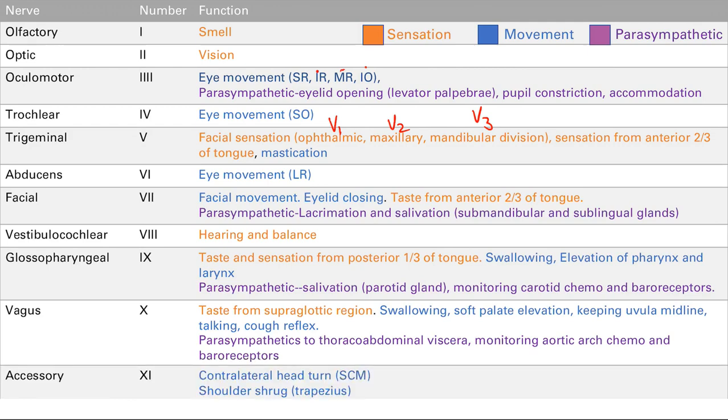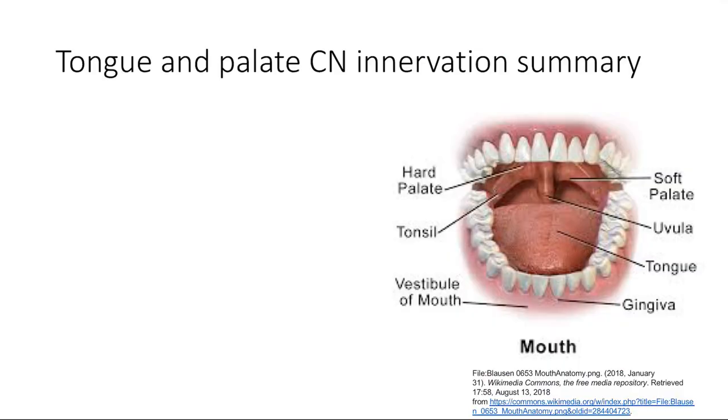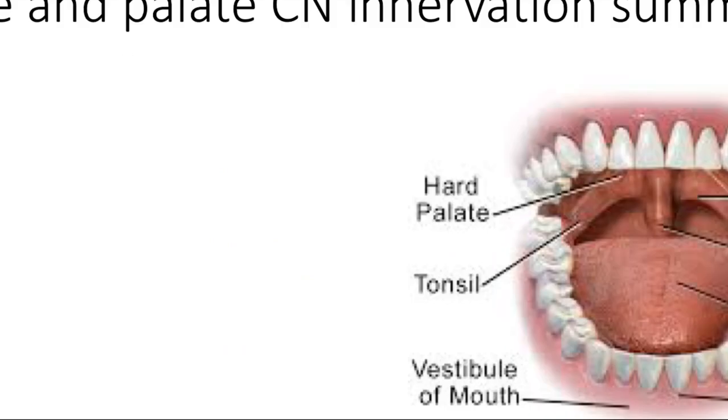Cranial nerve 11 is the accessory nerve, providing motor innervation to the sternocleidomastoid muscle and the trapezius. The sternocleidomastoid does contralateral head turning, and the trapezius does shoulder shrug. Finally, cranial nerve 12 is the hypoglossal nerve, responsible for tongue movement. We've now covered all the cranial nerves — many of them differentially innervate the tongue, so let's put it all together.